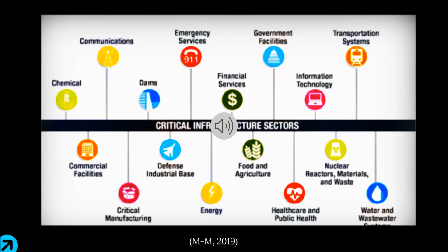There are 16 critical infrastructure sectors that assess systems and networks, whether physical or virtual, considered so vital to the United States that their incapacitation or disruption will have a deliberate effect on security, national economy, national public health, or safety, or any combination thereof. Here is a list of the 16 critical infrastructure sectors on this slide.